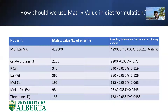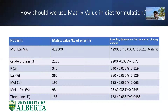Looking at crude protein, we do the same calculation: matrix value 2,200 times the inclusion rate equals 0.77 percent. It means that if you use this enzyme in the diet, it's going to liberate 0.77 percent of protein from your diet. It's the same story for other nutrients you can see here.